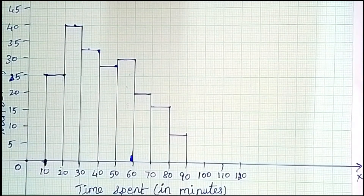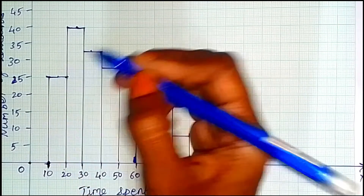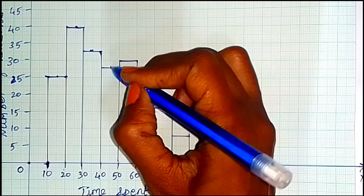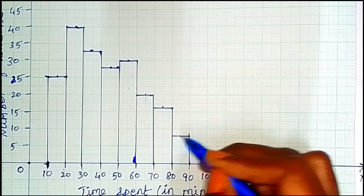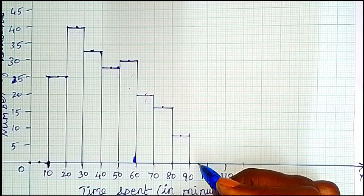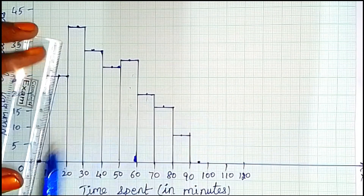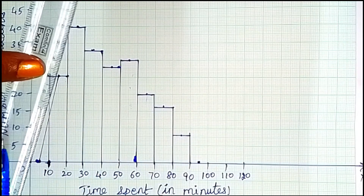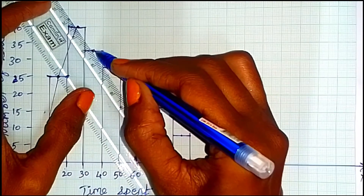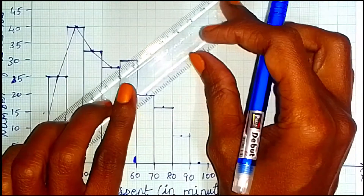Now the frequency polygon is drawn the same way. The center point of each class interval is taken. At the maximum line, the center point is marked, and all the points are joined. Here the center point is at the middle line. So for 0 to 10, the x-axis starts at 0, and mid-pointer is at 5 to 10. We join all mid-points to form the frequency polygon.